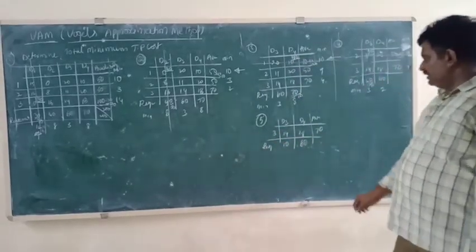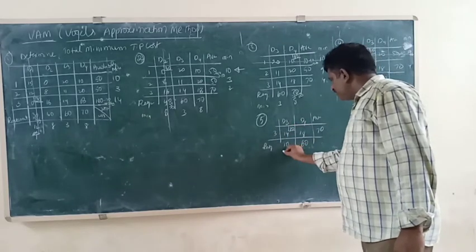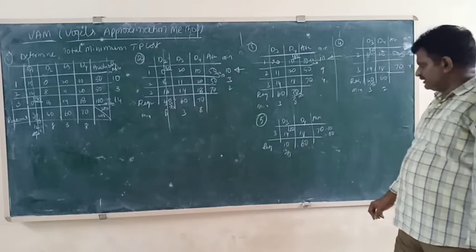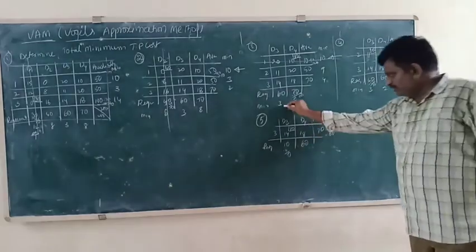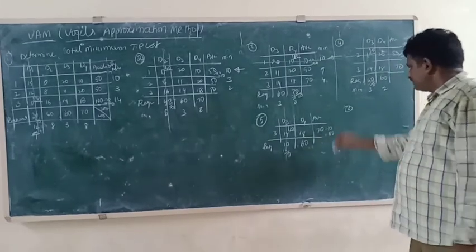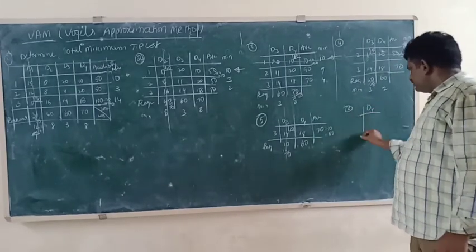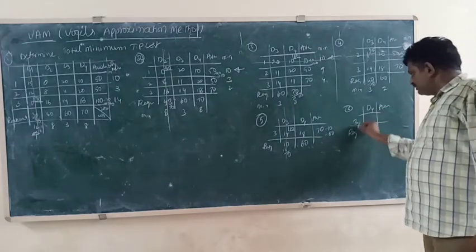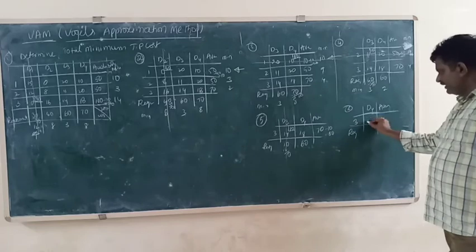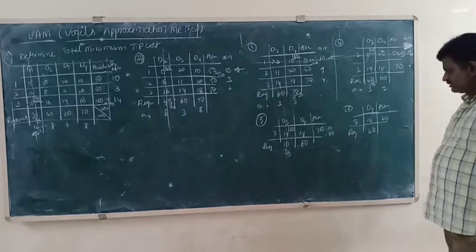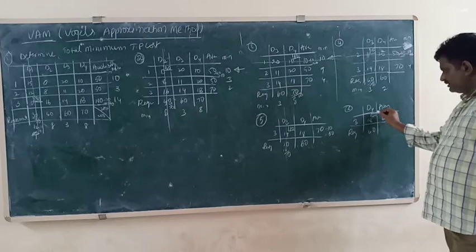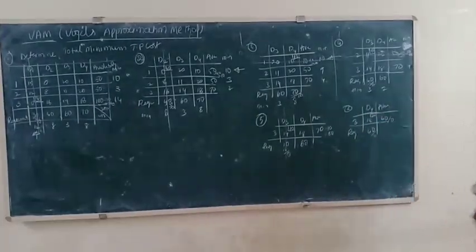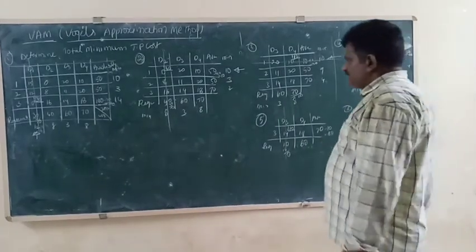The minimum value in the selected row gives the allocation. We allocate 60 to that cell: 10 minus 10 equals 0 and 70 minus 70 equals 0. Allocating 60 satisfies d3 — availability 60 minus requirement 60 equals 0. Then the final allocation covers d4 with value 18 and quantity 60, completing all requirements.